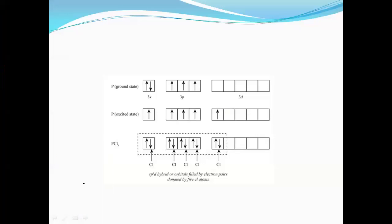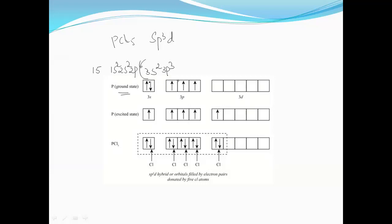When we look at the structure of PCl5, it undergoes sp3d hybridization. Phosphorus has atomic number 15, so its electronic configuration is 1s2, 2s2, 2p6, 3s2, and 3p3 — giving three electrons in the p subshell and a total of five electrons in the valence shell, but only three unpaired electrons in the ground state.